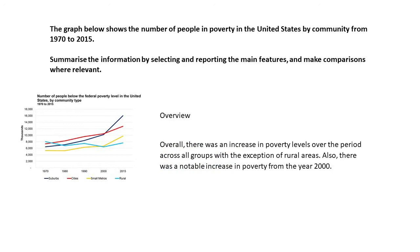Here's my overview: 'Overall, there was an increase in poverty levels over the period across all groups, with the exception of rural areas. Also, there was a notable increase in poverty from the year 2000.' I always start with 'overall' to signal to the examiner that this is my overview. Make sure you don't ignore outliers — rural areas didn't go up, so I include that exception. You should be able to find at least two main features.